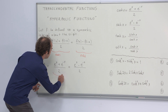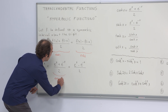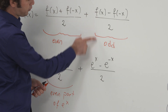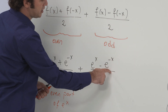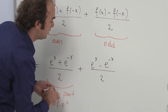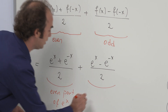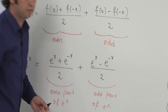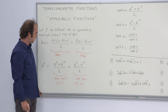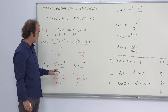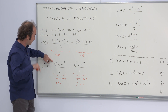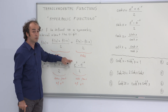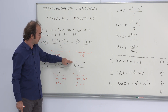The first part, [e^x + e^(−x)] / 2, is called the even part of the exponential function. The second part, [e^x − e^(−x)] / 2, is the odd part of e to the x. Based on these two functions, I'm going to define the hyperbolic functions. The even part of e to the x is called hyperbolic cosine of x, and the odd part of e to the x is defined as hyperbolic sine of x.